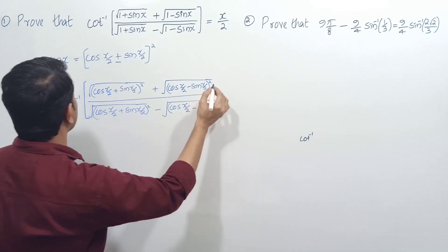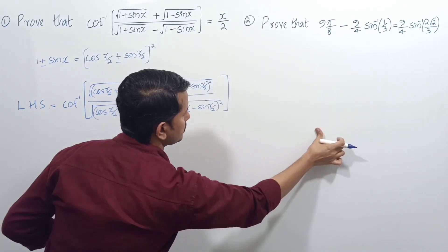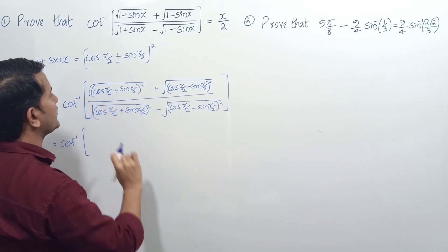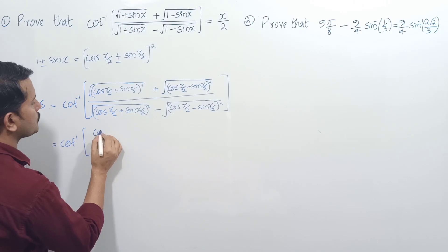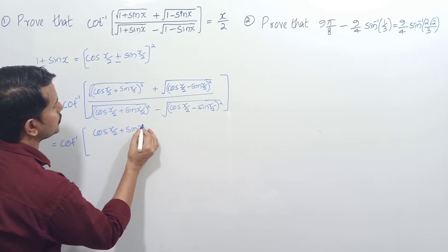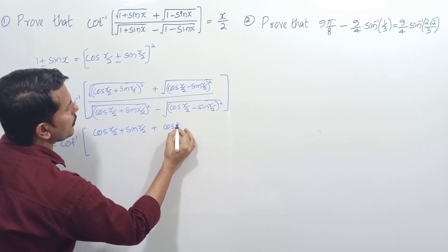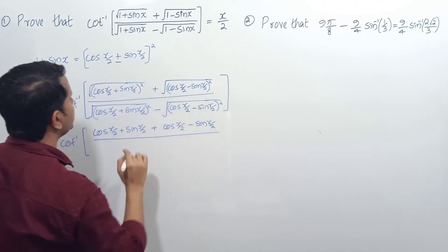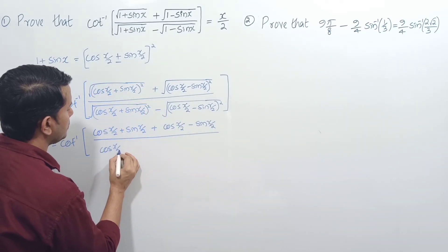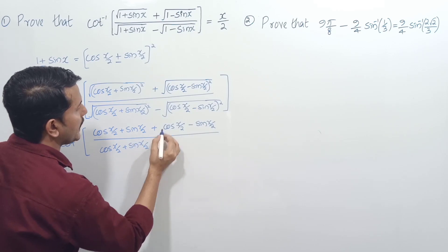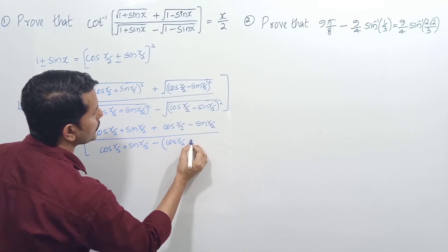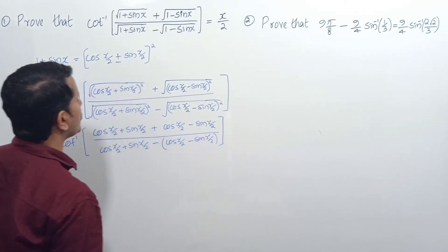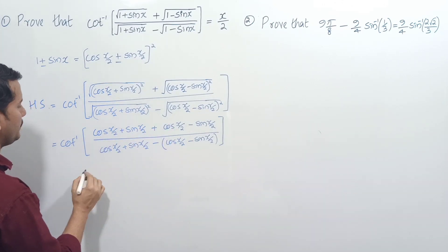After the square root and square cancel, we get cot inverse of: numerator is (cos(x/2)+sin(x/2)) + (cos(x/2)-sin(x/2)), and the denominator is (cos(x/2)+sin(x/2)) minus (cos(x/2)-sin(x/2)). In the numerator, cos(x/2) + cos(x/2) gives 2·cos(x/2).